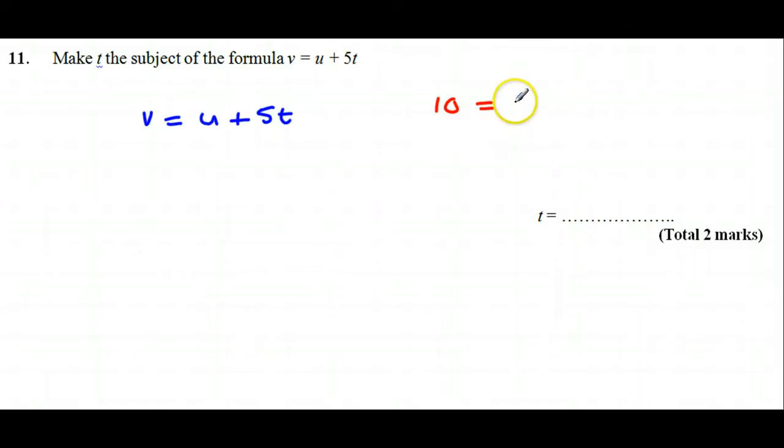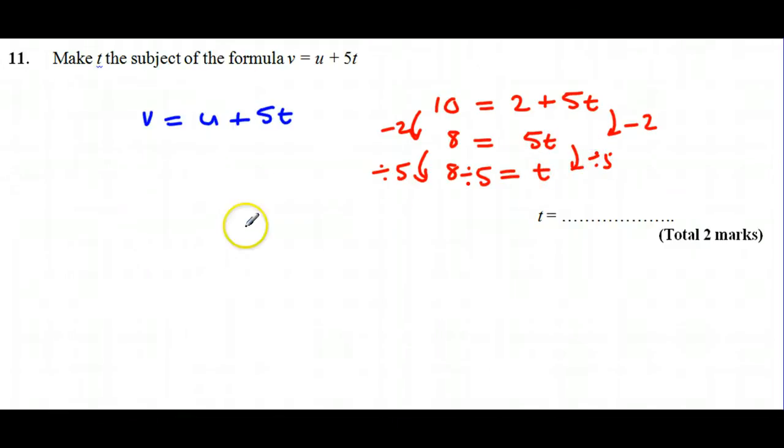Take away 2 from both sides like so, and then you would divide both sides by 5. There's no difference to what we do with this particular equation here, that formula.